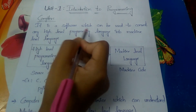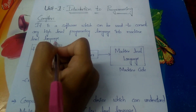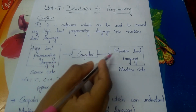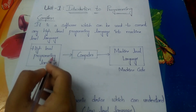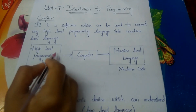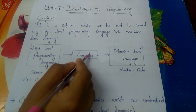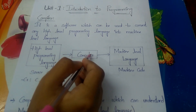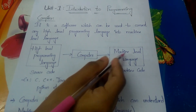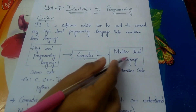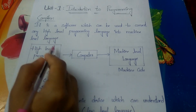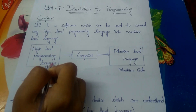The computer can understand only machine-level language, but the source code — which is the high-level programming language — is what we give to the computer. The computer processes it, stores the given information and data, and the output is in machine-level language, which is also called machine code.